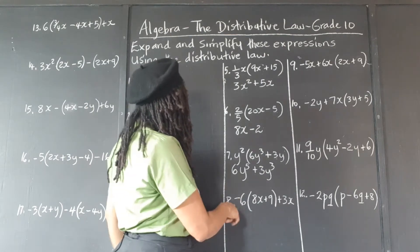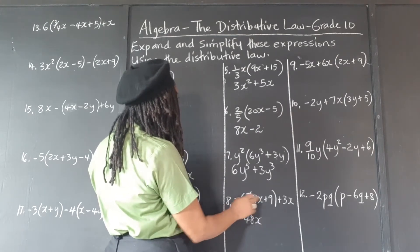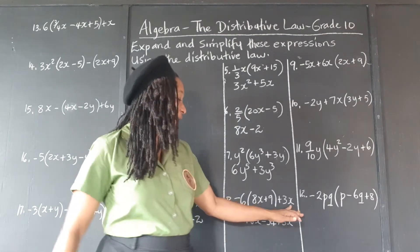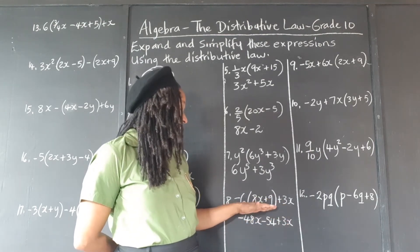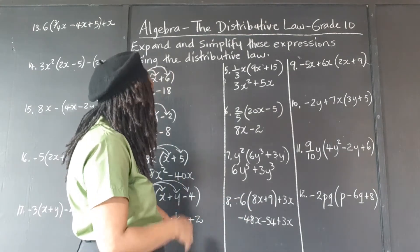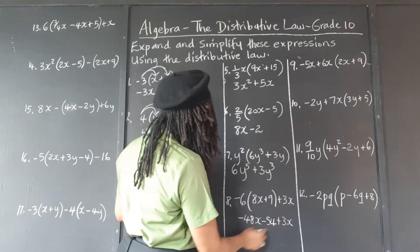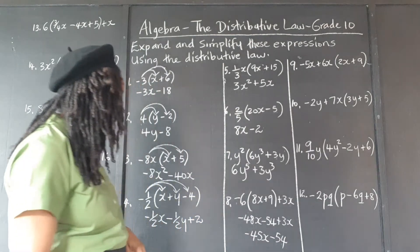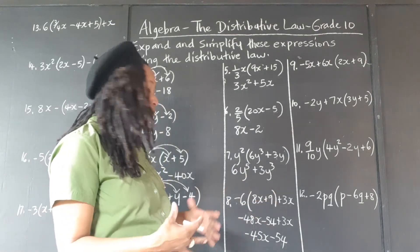Negative 6 times 8 is negative 48, and negative 6 times 9 is negative 54, plus 3x. The 3x is out here by itself; it's not affected by the negative 6 because there's a plus sign separating it — only the terms in the brackets are affected by the negative 6. So we can combine negative 48x and the 3x: negative 48x plus 3x gives negative 45x minus 54. That's our final answer — we expanded the brackets and then grouped the like terms.